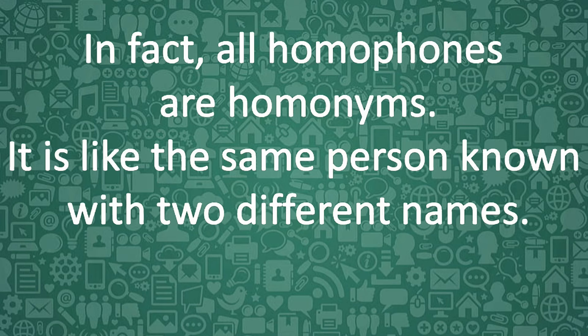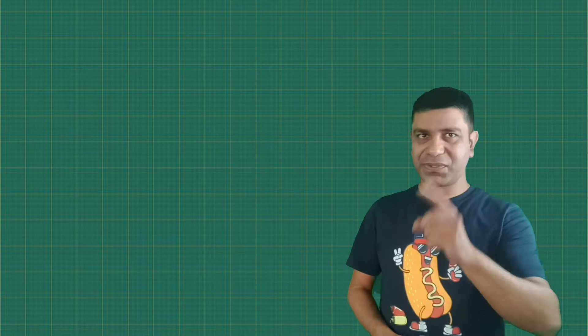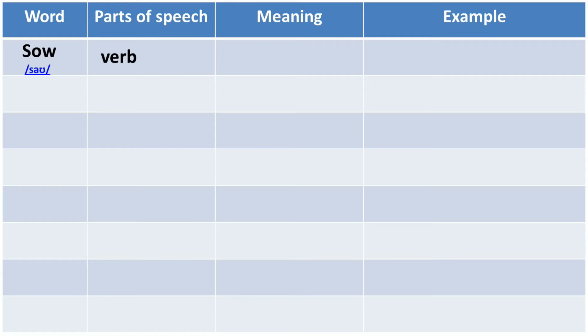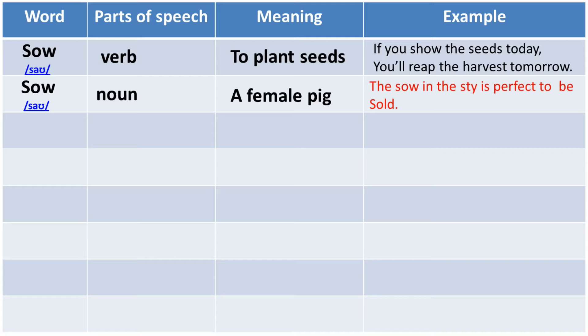There are words that are spelled the same but have different meanings — the spelling is the same but the meaning is completely different. Such words are called homographs. In Greek, homo means same and graph means write or writing. For example, sow as a verb means to plant seeds: 'If you sow the seeds today, you'll reap the harvest tomorrow.' Sow as a noun means a female pig: 'The sow in the sty is perfect to be sold.'